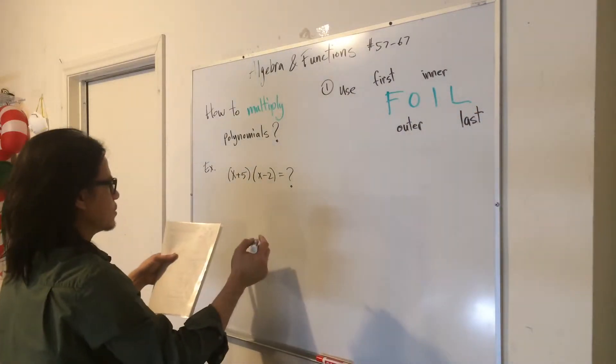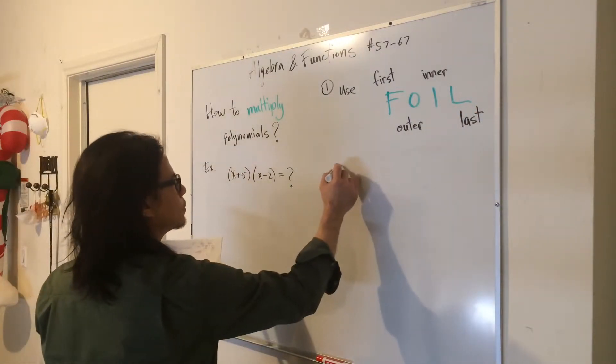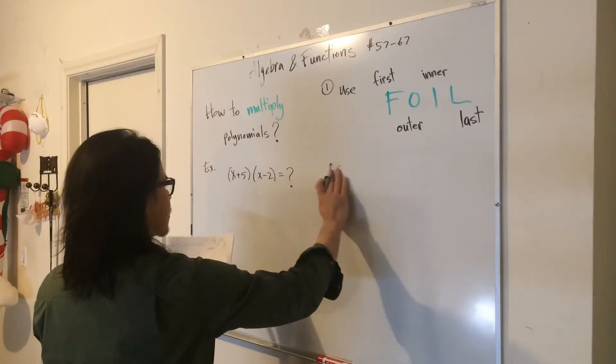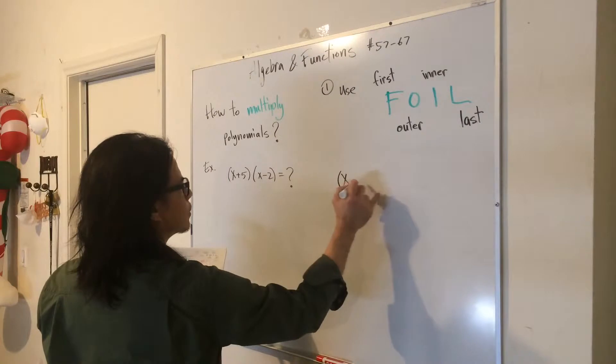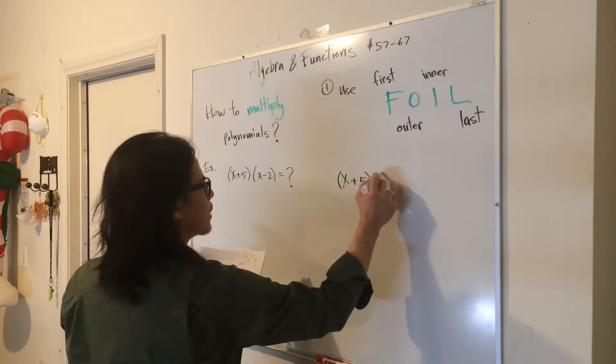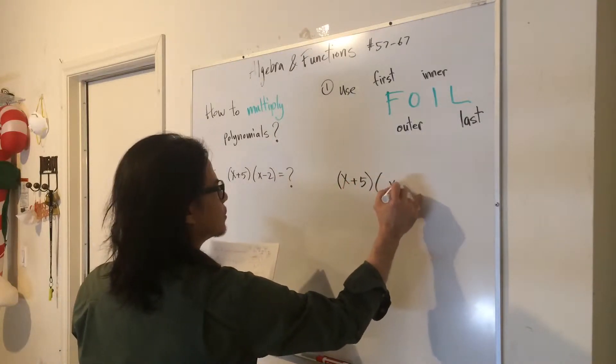So to demonstrate this, we're going to rewrite the two terms there: x plus 5 and x minus 2.